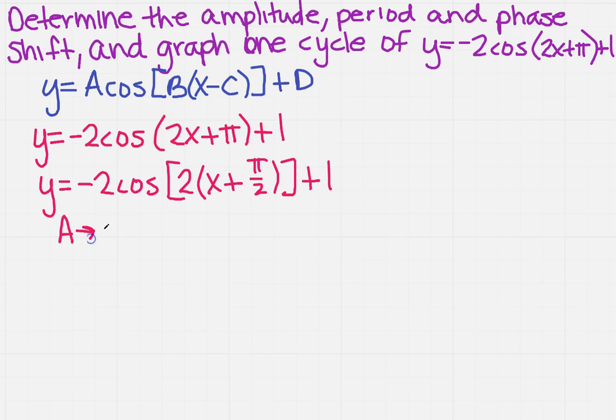I know what a is. A is going to be minus 2, B is 2, C is going to be minus pi over 2, and D is 1.